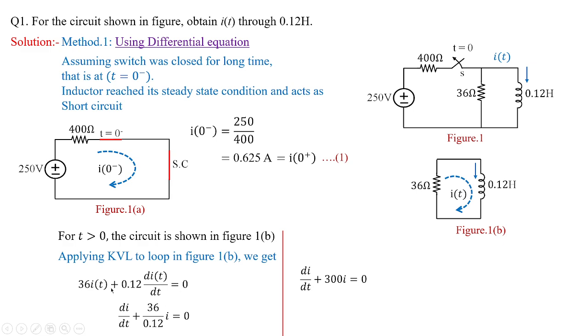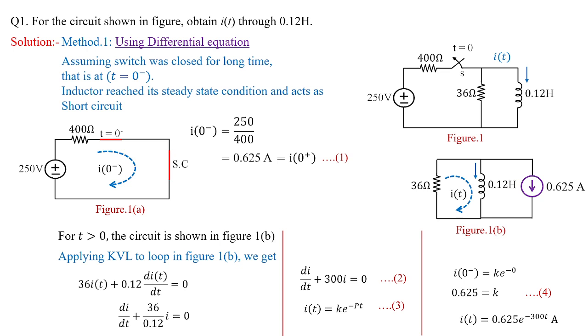Changing the equation to a mathematical homogeneous differential equation, we know the solution for this is simply i(t) is equal to Ke to the power of minus Pt where P is here, that is 300. We need to find out the value of K and that can be obtained with the help of initial conditions. Initially, the inductor was charged to 0.625 amperes. We are going to apply this condition in order to determine the value of K. So, i(0-) is equal to Ke to the power of 0 and K value is 0.625. You can substitute in equation 3 and finally, you are going to get the value of i(t) is equal to 0.625e to the power of minus 300t amperes.